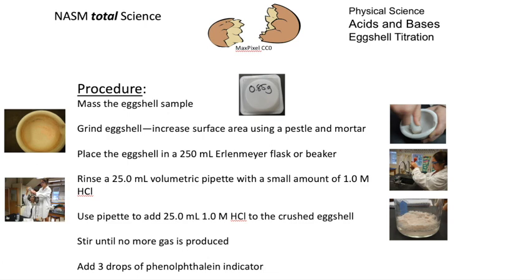And here's a summary of what you're going to do. Mass the eggshell sample accurately. And it may be a good idea to actually mass the ground eggshell to make sure you haven't lost any in the mortar. And you're going to place the crushed eggshell in an Erlenmeyer flask and prepare a volumetric pipette with a small amount of the 1 molar hydrochloric acid for rinsing. And then add exactly 25 milliliters of the acid to the crushed eggshell sample in a beaker or an Erlenmeyer flask, stirring until no more gas is produced so the reaction has completed. And then add three drops of your indicator.